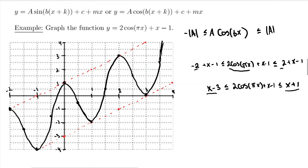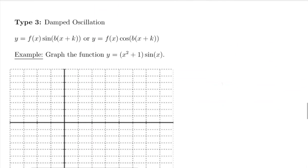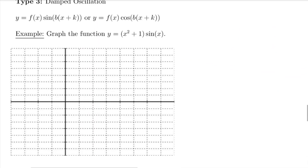Now, the third type of graph I want to look at is something that's going to cause a dampened effect or dampening in your function. And this is going to occur when you're multiplying the graphs of sine or cosine by some sort of function.